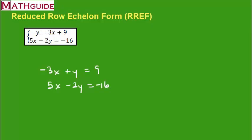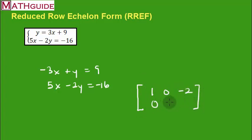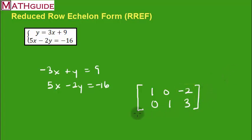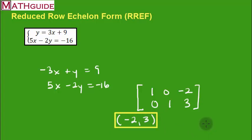The calculator gave us the matrix with 1, 0, negative 2 on the first row and 0, 1, 3 on the second. You look at the last column, take those values, and make an ordered pair. The top number is the X value and the bottom number is the Y value, giving us (negative 2, 3). Make sure you go back to MathGuide and check out the text-based lessons, interactive quizzes, and instructional videos.